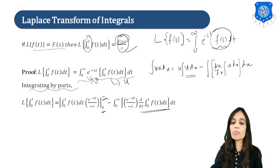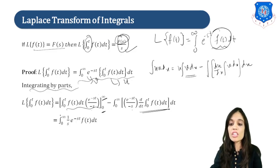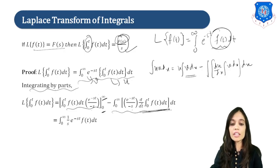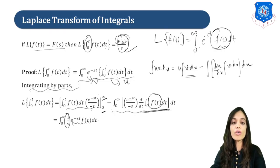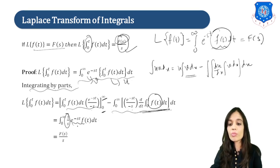Now let us simplify by putting the limits in the bracket. This whole bracket will go to 0, so only the second bracket will remain. The derivative of the integral gives only f(t). Taking the minus signs together gives plus, so we will have 1 upon s times e raised to minus st times f(t) dt.